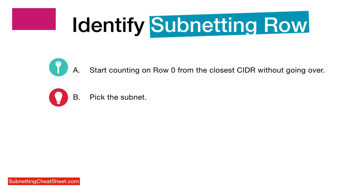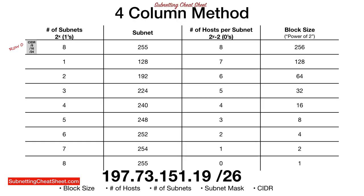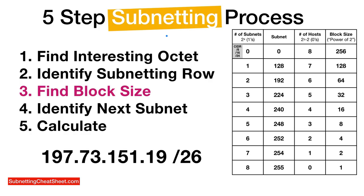To summarize step two: identify the subnetting row by starting to count at zero from the closest CIDR without going over. Also, if they give you the subnet mask, it's even easier — just look at the second column and find your subnet mask. For example, if given 255.255.255.192, you find 192 in the second column and that's your subnetting row. We've already identified the interesting octet and the subnetting row.